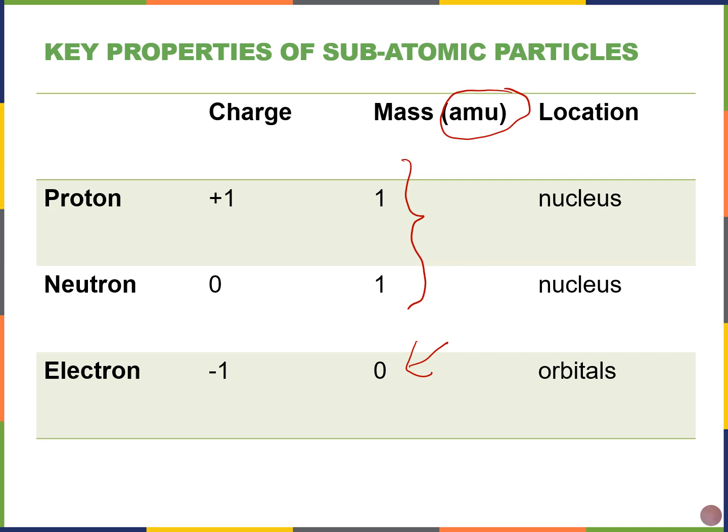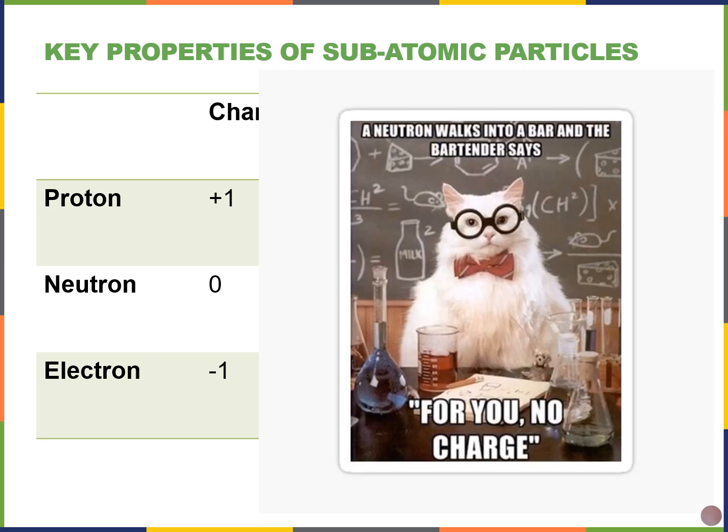Looking at the charges: protons are positively charged, neutrons are neutral or not charged, and electrons are negatively charged. I always like it when I see these memes pop up on Instagram or Reddit. This one says: a neutron walks into a bar, and the bartender says, 'For you, no charge.' Pretty cool, right?